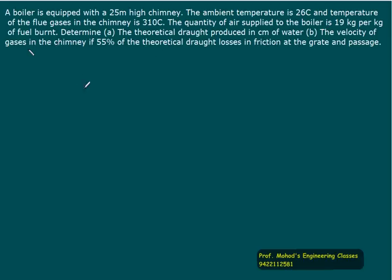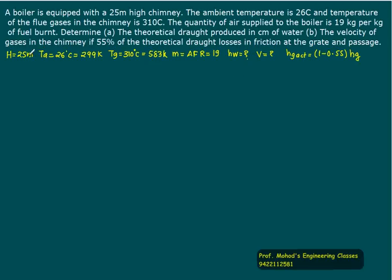We have a height of chimney equal to 25m. Atmospheric temperature: 26°C, so Ta = 26 + 273 = 299K. Flue gas temperature: Tg = 310 + 273 = 583K. Mass of air-fuel ratio is 19. We want to calculate hw and velocity. Loss is 55%, so available head will be 1 minus 0.55.